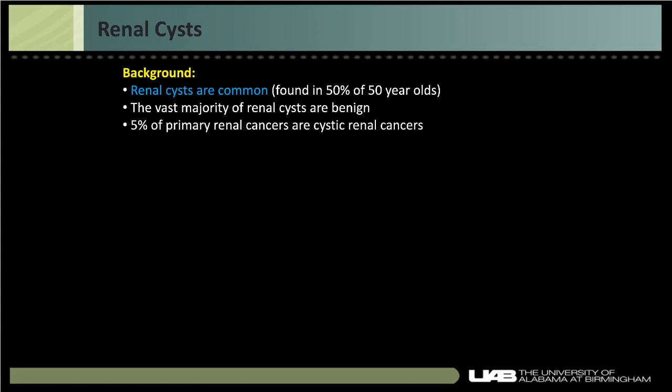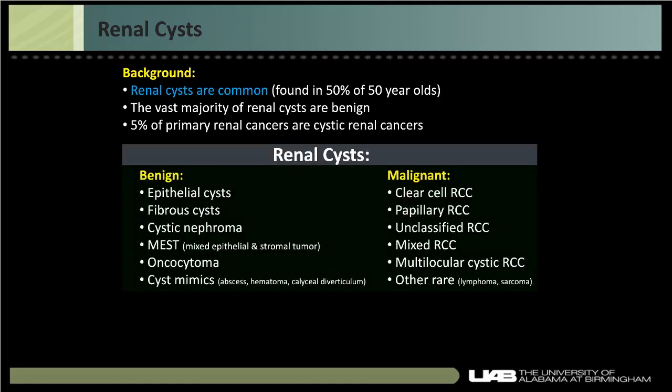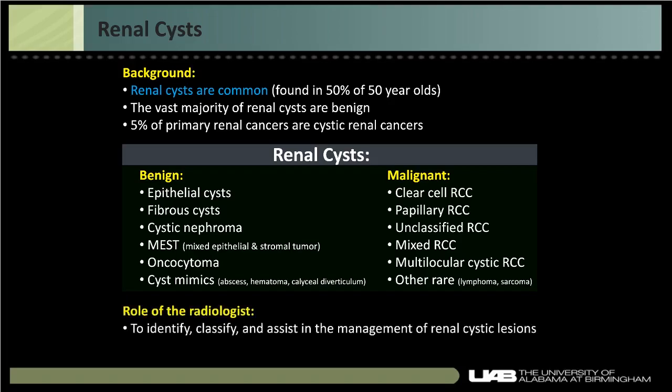Renal cysts are common — some report that 50% of 50-year-olds have renal cysts, and we may see even more when considering sub-centimeter cysts. The vast majority, more than 99%, are benign. While 5% of primary renal cancers are cystic, most renal cysts are benign. Types include benign epithelial or fibrous cysts, cystic nephroma, mixed epithelial and stromal tumors, oncocytoma, and mimics like abscesses, hematomas, and calyceal diverticulums. On the malignant side: clear cell, papillary, unclassified, mixed RCC, and multilocular cystic RCC. Our role as radiologists is to identify, classify, and assist in management of renal cystic lesions.